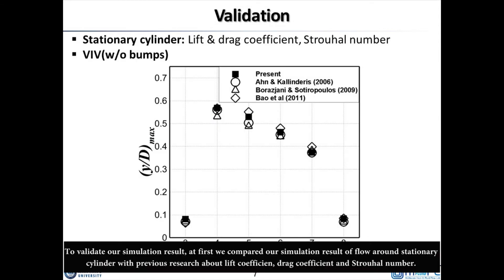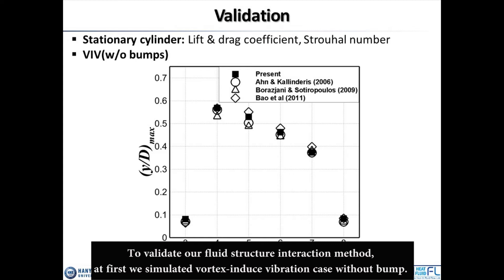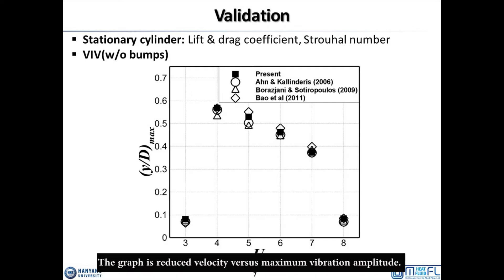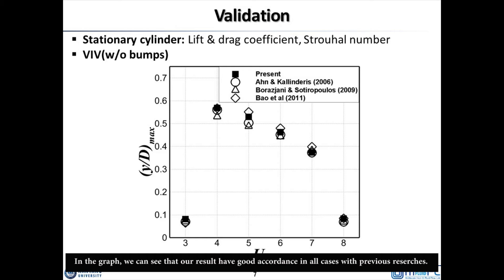To validate our simulation results, we first compared our simulation of flow around a stationary cylinder with previous research in terms of lift coefficient, drag coefficient, and Strouhal number. To validate our fluid-structure interaction method, we simulated a vortex-induced vibration case without a bump. The graph shows reduced velocity versus maximum vibration amplitude; reduced velocity is a dimensionless number representing the natural frequency of the cylinder. We can see that our results show good agreement with previous research across all cases.